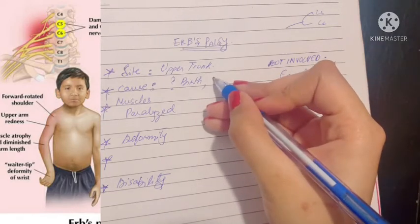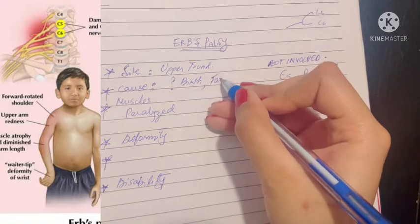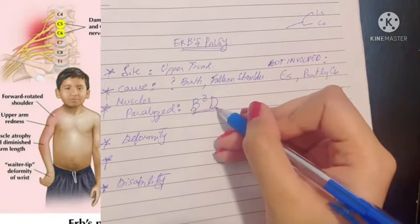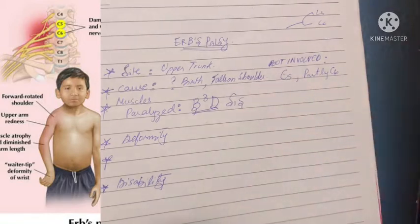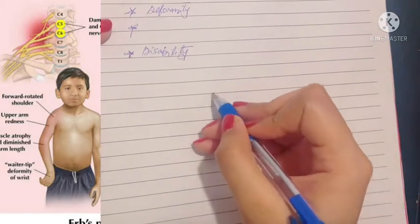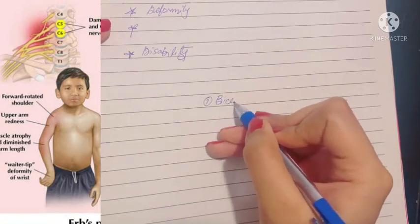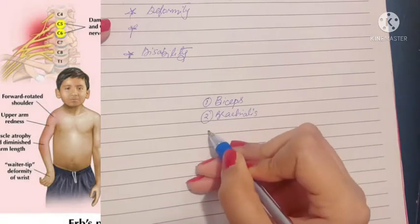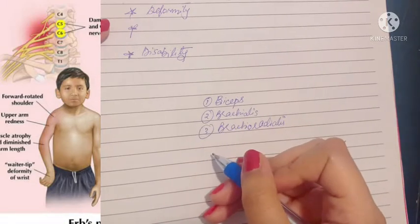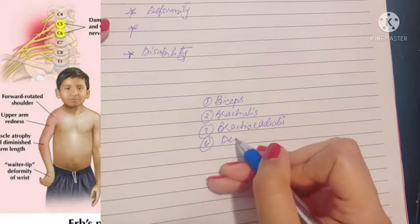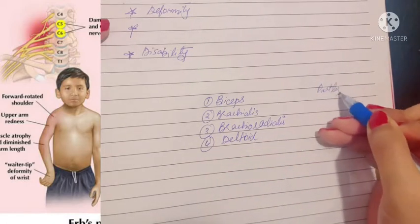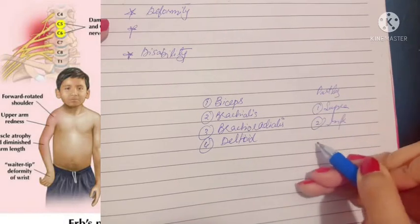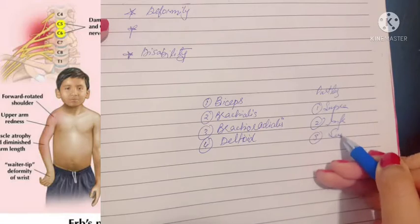The muscles paralyzed are BDCIS. This abbreviation stands for: B represents biceps, brachialis, and brachioradialis. D stands for deltoid. CIS represents the partly involved muscles: supraspinatus, infraspinatus, and supinator.